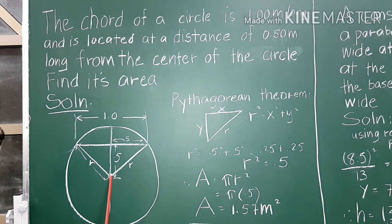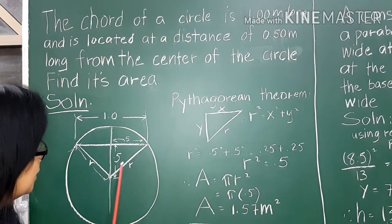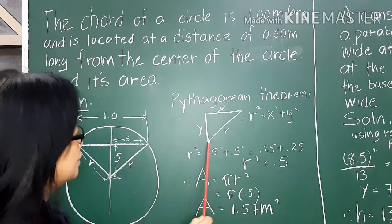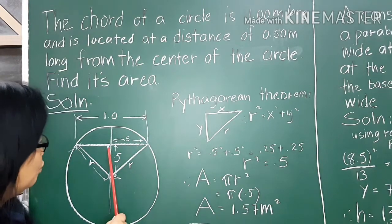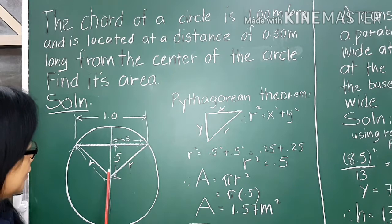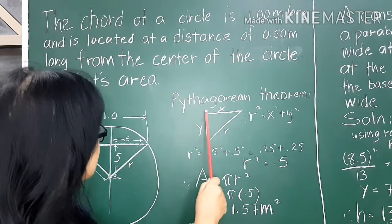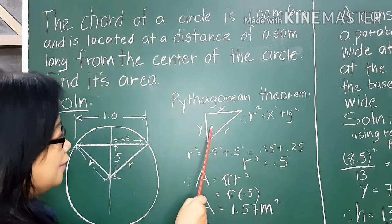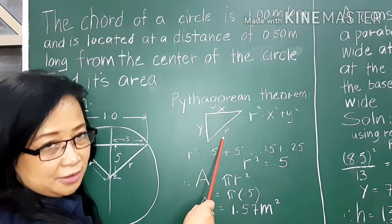From the given, we have to extract a right triangle so we can find r. If we remove part of the figure, we make a right triangle where r is the radius, y is the distance from the center to the chord, and x is the half-length of the chord. According to the Pythagorean theorem, r squared is the hypotenuse.